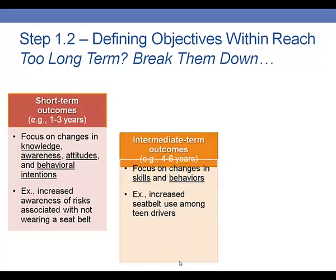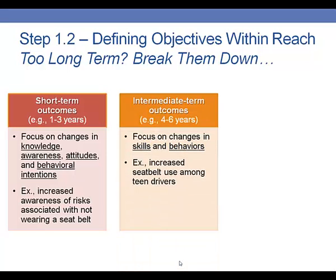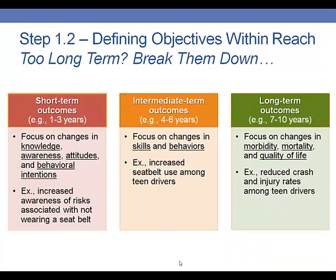If we think a little bit bigger — say four to six years — we might want to think about intermediate-term outcomes. Intermediate-term outcomes typically focus on changes in individuals' skills and behaviors, like increasing seatbelt use among teen drivers. Of course, big picture, we can also think about long-term outcomes. Long-term outcomes typically take place over a seven-to-ten-year period, and long-term we might be hoping to decrease morbidity and mortality and increase quality of life in our target population — for example, reducing crash and injury rates among teen drivers.